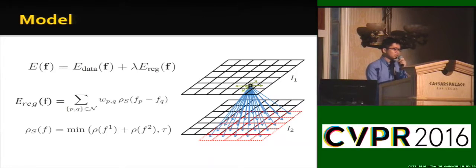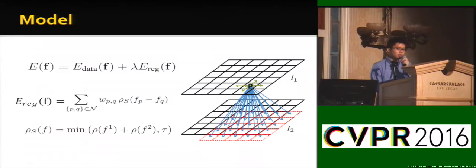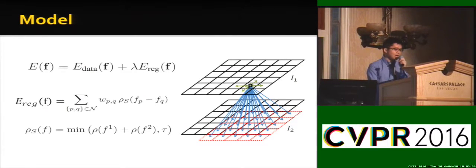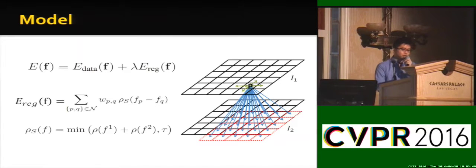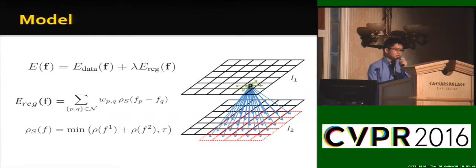For the data term, we simply use truncated cost — no discrete matching is used. Our optimization formulation uses F1 and F2 as image features, and rho is the penalty function such as L1.